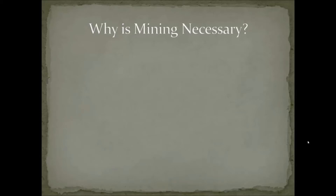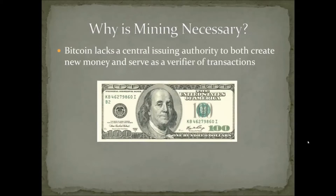Let's begin with an elucidating example. Here is a $100 bill, and you'll notice a couple of features about it. First, it has the Federal Reserve, which is the central issuing authority. You have the United States of America, so you understand what nation it's associated with. There are signatures, the Federal Reserve seal, and a number attached to it.